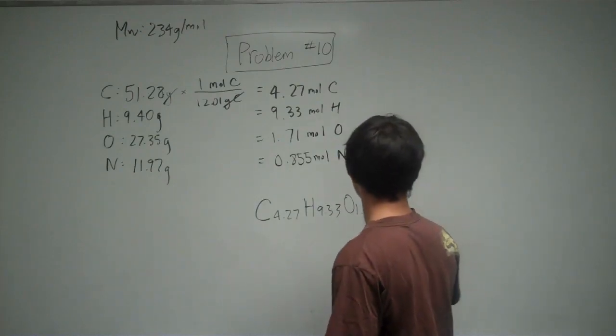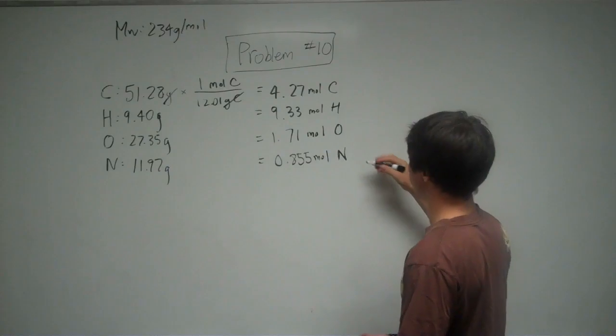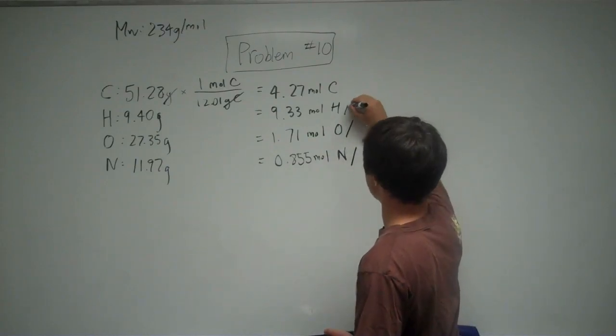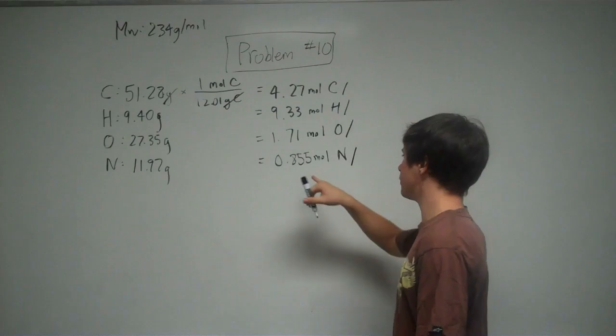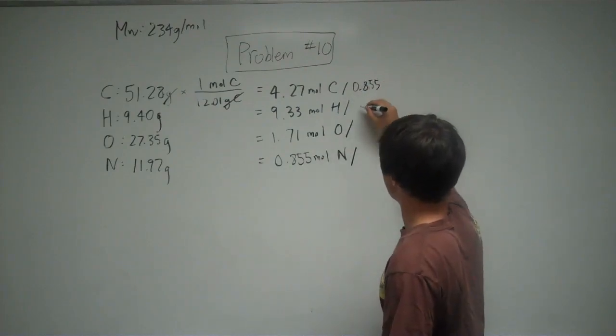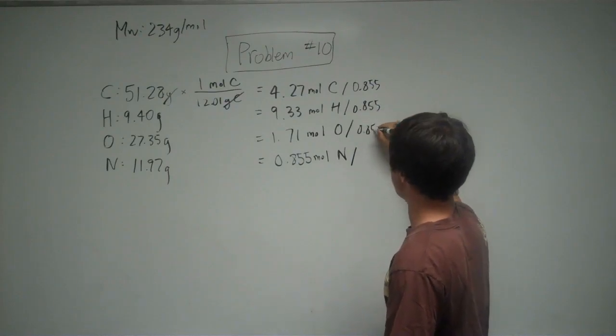So what you can do to make this a bit nicer is divide the empirical formula by the smallest one. So 0.855 is the smallest here. So you can divide each by 0.855.